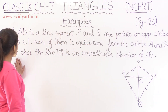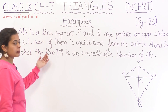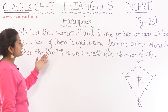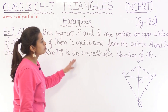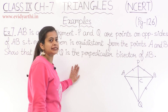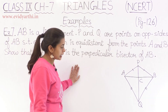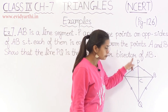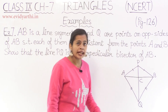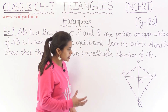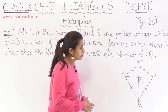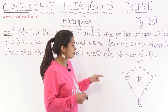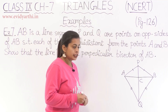Now what do we need to show? This was what was given. Now we will show: show that line PQ is the perpendicular bisector of AB. So we will show that line PQ is perpendicular bisector of segment AB.